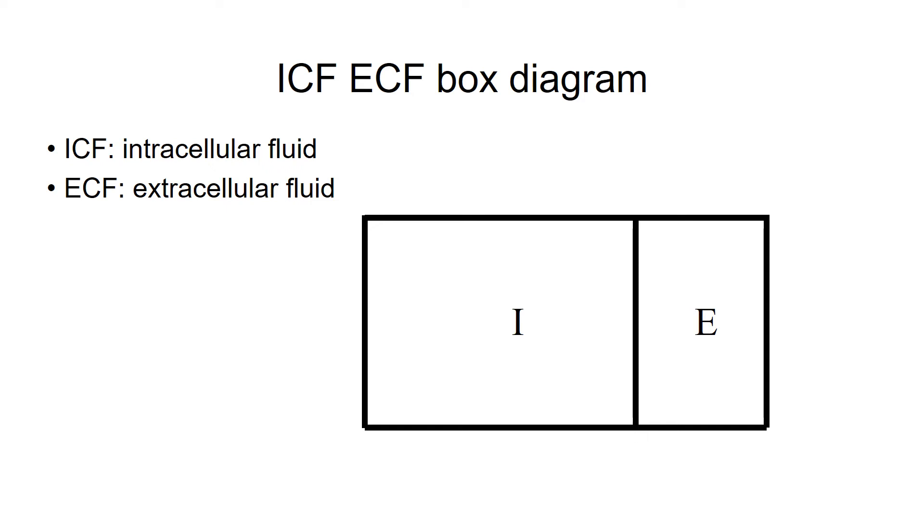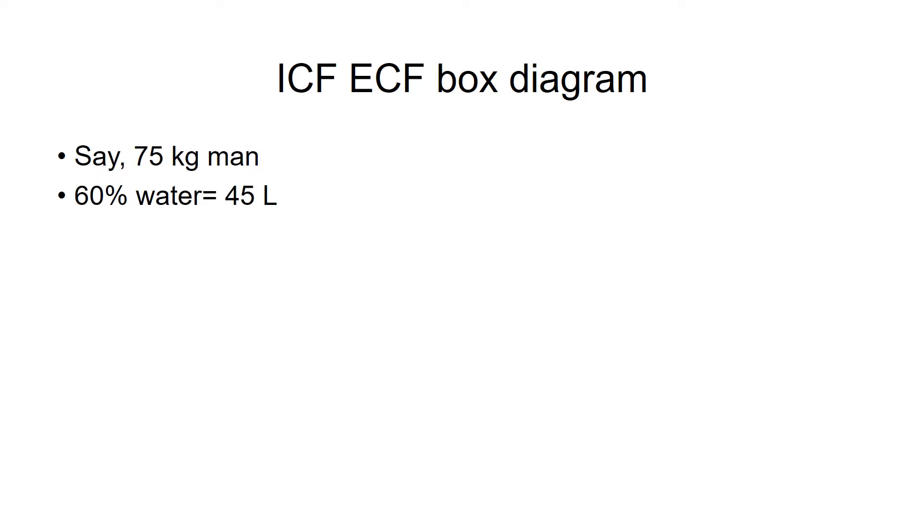Box diagrams showing intracellular fluid and extracellular fluid can be a source of confusion for students, and this is my attempt to clarify this concept. Let's say we have a 75 kilogram man. 60% of that would be water, which is 45 liters. Of that, 40% or 30 liters would be intracellular, and 20% or 15 liters would be extracellular.